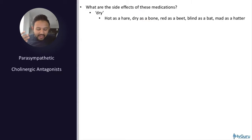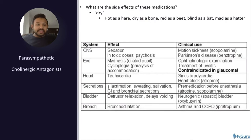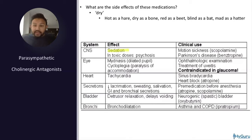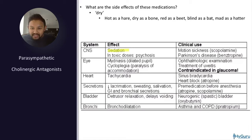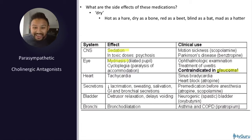Parasympathetic antagonists like atropine cause dryness — the classic mnemonic 'hot as a hare, dry as a bone, blind as a bat.' Anticholinergic effects include sedation — that's why diphenhydramine (Benadryl), a second-generation H1 blocker with anticholinergic effects, can cause sedation and be used as a sleep aid. Atropine, a cholinergic antagonist, can also cause mydriasis, worsening closed-angle glaucoma. The effects of atropine include increased heart rate, so when patients are super bradycardic you can give atropine.